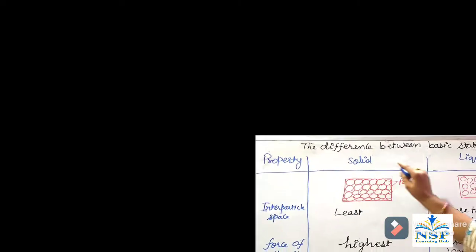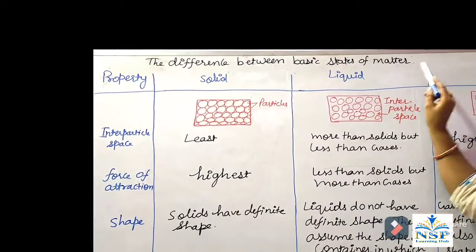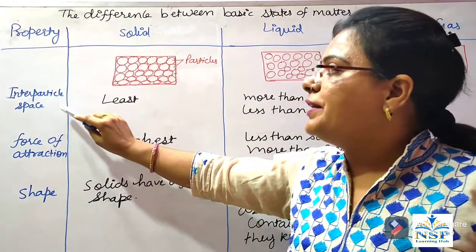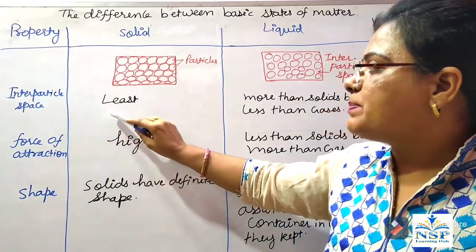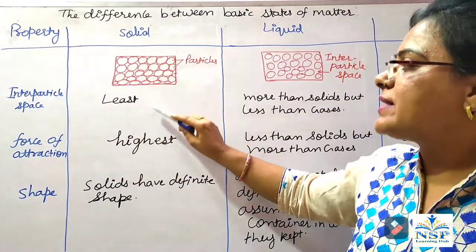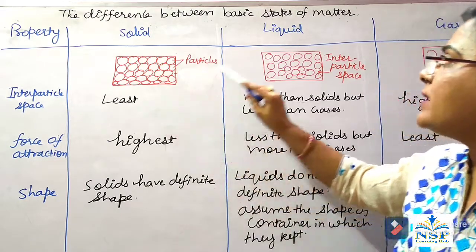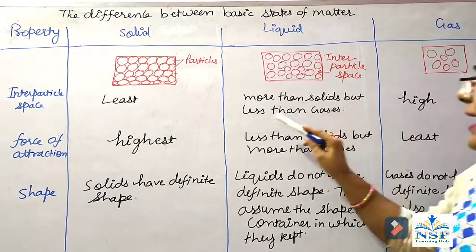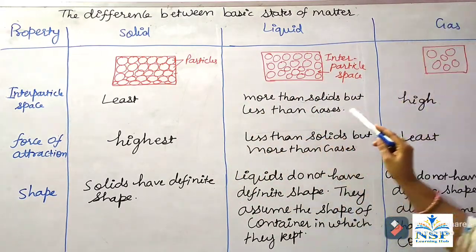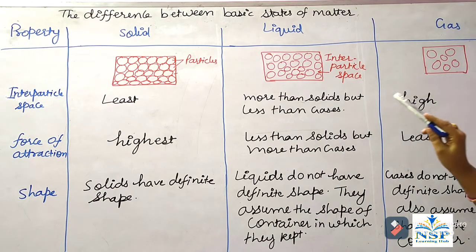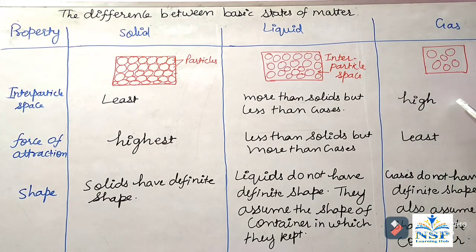The difference between basic states of matter. Number 1, inter-particle space. Inter-particle space in solids is least. In liquids, more than solids but less than gases. And in gases, the inter-particle space is very high.